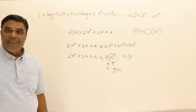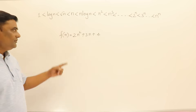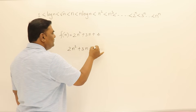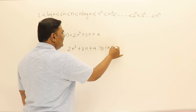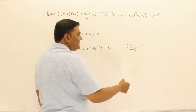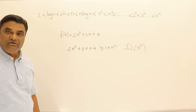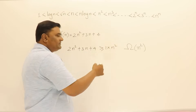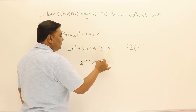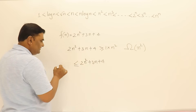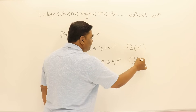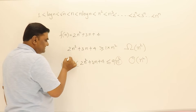For the same function f(n) = 2n² + 3n + 4, we can also say it is greater than or equal to 1·n², so it is Omega of n². Since 2n² + 3n + 4 lies between 1·n² and 9·n², this function is Theta of n² — n² appears on both sides.